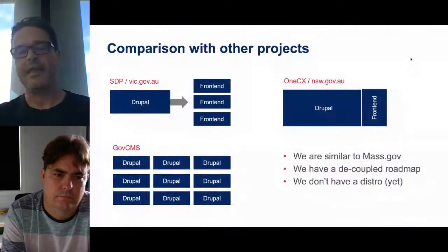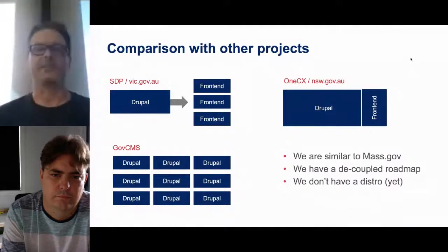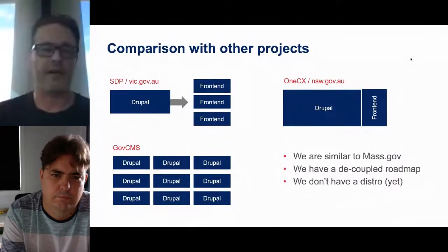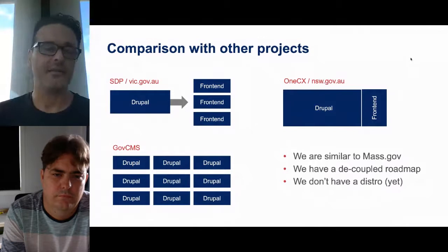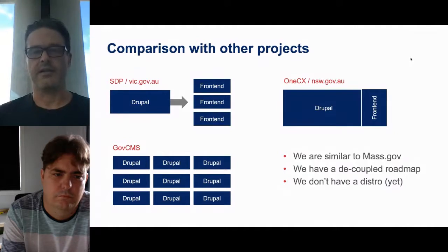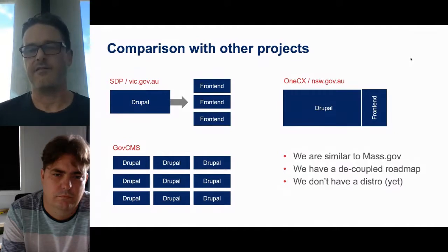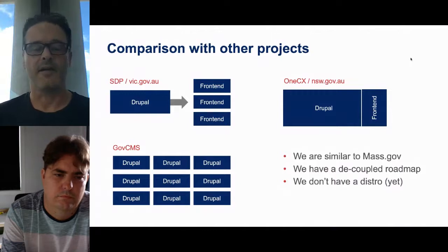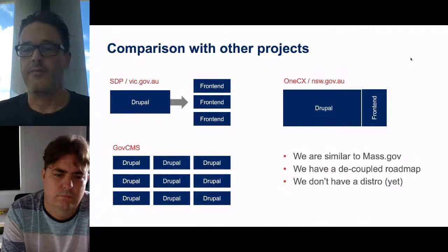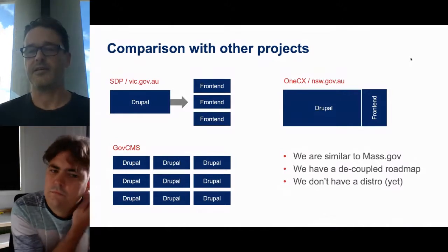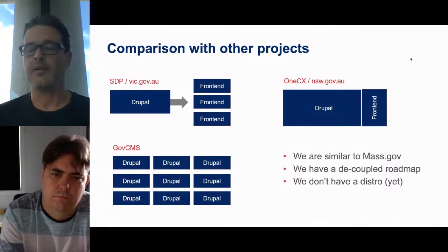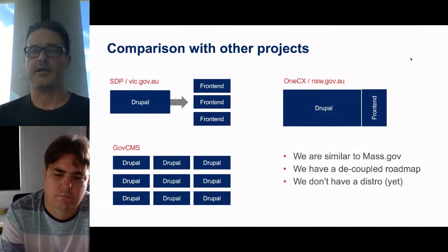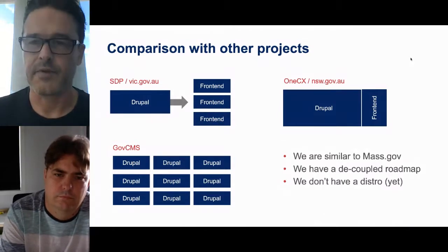Some people say they're using GovCMS, so it's worth clarifying how we differ from other major projects. SDP in Victoria has a Drupal content instance with decoupled front ends. GovCMS is just multiple separate Drupal instances. We are much more similar to mass.gov in our structure — a single Drupal site with the front end built in. We do have a decoupled roadmap, but we don't have a distribution at the moment. We are basically a single site.